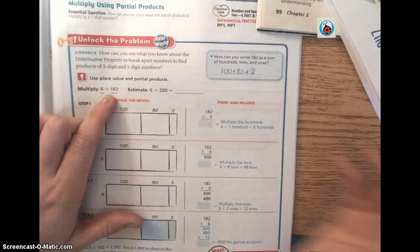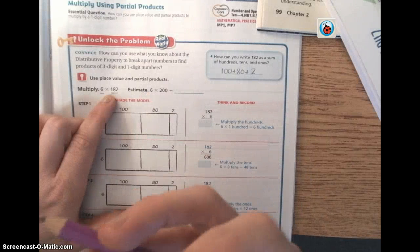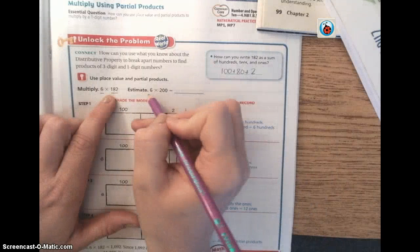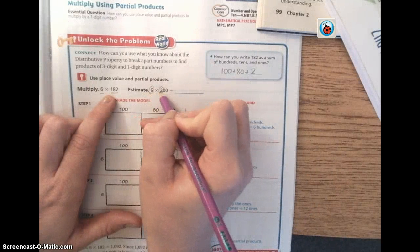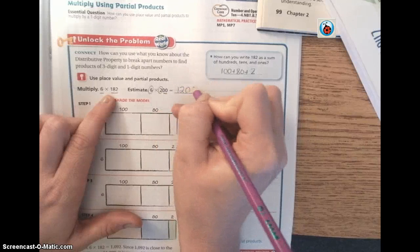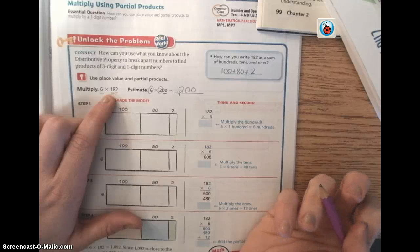Here they're asking you to estimate. We estimate to find about what the answer is going to be or to find if the answer is reasonable. So to estimate, I'm going to do 6 times 2 is 12 plus 2 zeros. So I know my answer is going to be about 1,200.